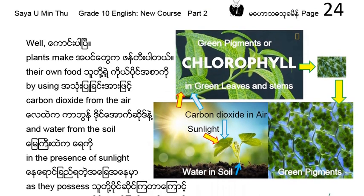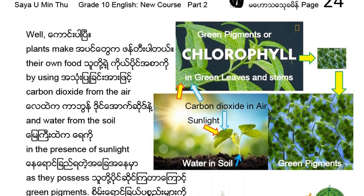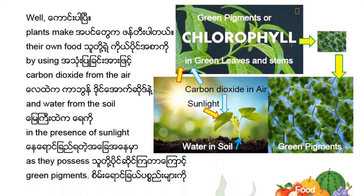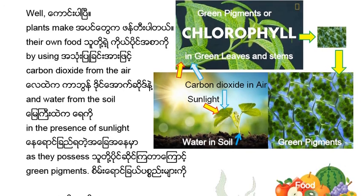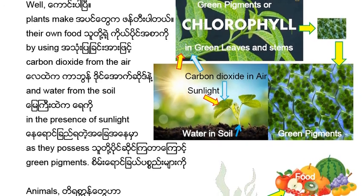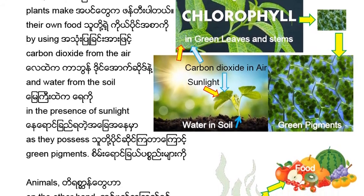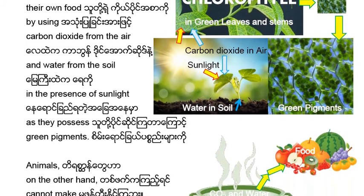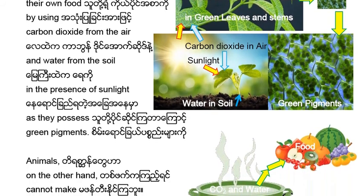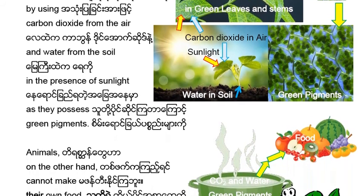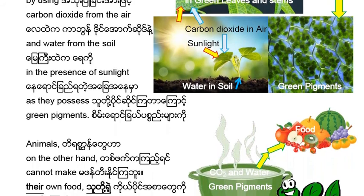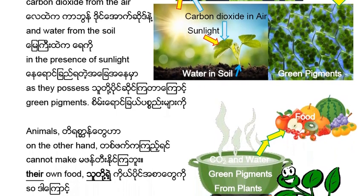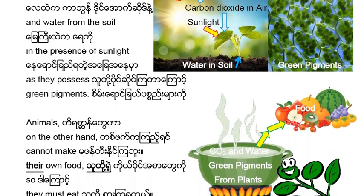Well, plants make their own food by using carbon dioxide from the air. They need carbon dioxide and water from the soil. In the presence of sunlight, as they possess green pigments.